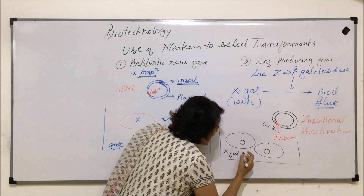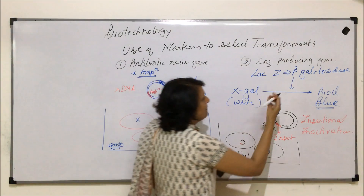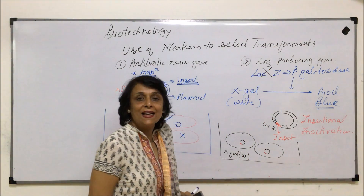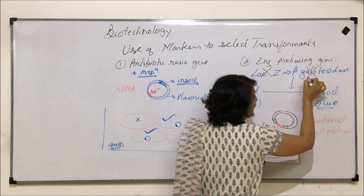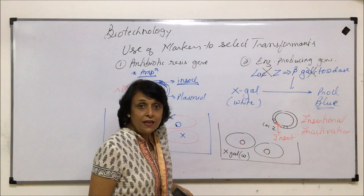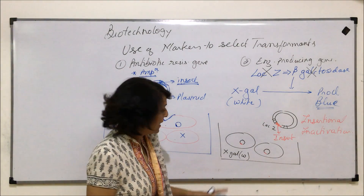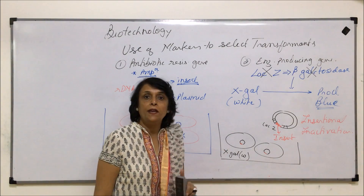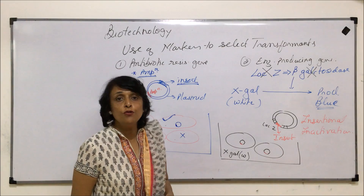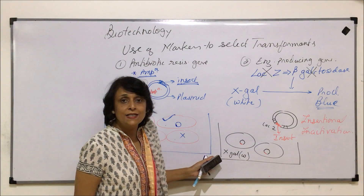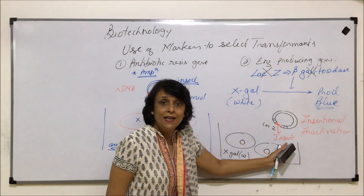Originally, X-gal is white. By this insertional inactivation, we have inactivated the LAGZ gene because our insert was put into the gene. Because of this inactivation, beta-galactosidase is not synthesized. That means the enzyme required to convert white X-gal into a blue product is not there. So this white X-gal will remain white. If our medium remains white, this indicates that these cells are not able to produce the enzyme — because we have inactivated it using the insert.